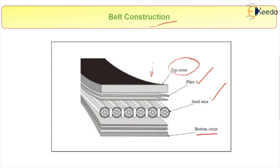There are a number of layers called plies, and after the plies we have steel wires. These steel wires give additional strength to the belt. The top cover and bottom cover are made up of rubber or fabric, so they don't have much strength on their own, but that strength is increased because of the steel wires and the plies.